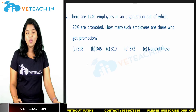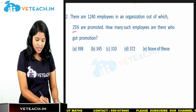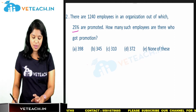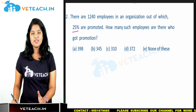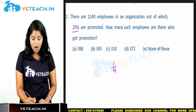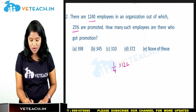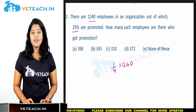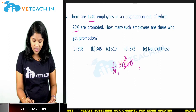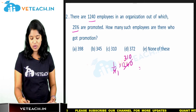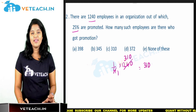Next question: there are 1240 employees in an organization, out of which 25% are promoted. How many employees got promotion? Simply, 25% is 1/4th of the total employees. So 1/4 of 1240: 1240 divided by 4 gives 310. The number of employees who got promotion is 310, so option C is our correct answer.